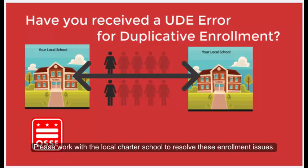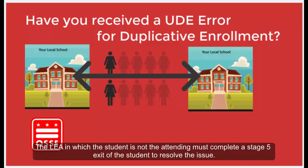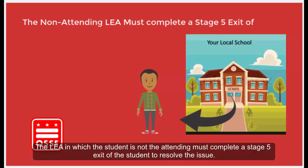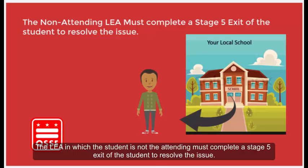please work with the local charter school to resolve these enrollment issues. The LEA in which the student is not attending must complete a Stage 5 exit of the student to resolve the issue.